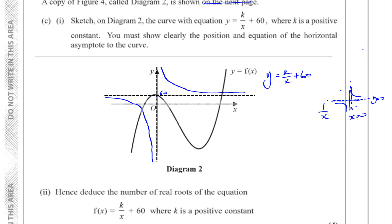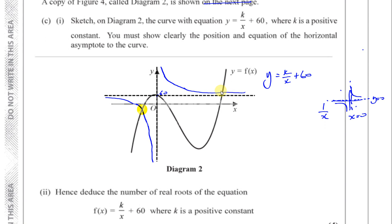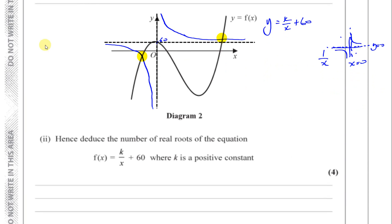It then says: hence deduce the number of real roots for the equation f of x equals k over x plus 60. This is y equals f of x and y equals k over x plus 60. The roots of the equation where they equal each other will be where the two curves intersect. We can see they intersect in two places and will never intersect again — this curve continues going down away from the y-axis while the other approaches the asymptote. So there are only two places these two curves will ever meet, meaning there are two real roots.